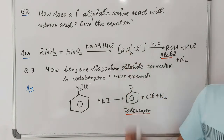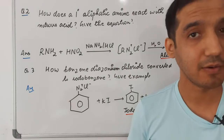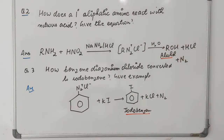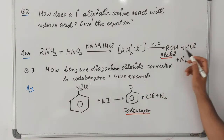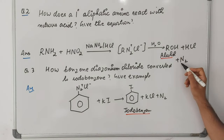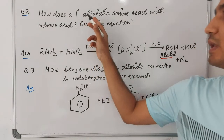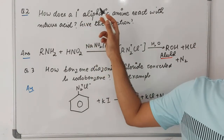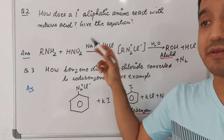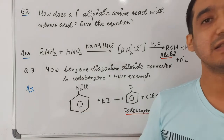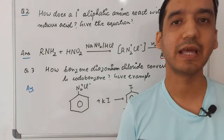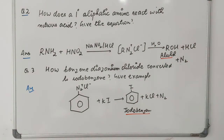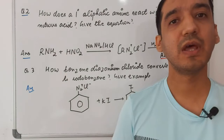Because the alkyl diazonium salt is unstable, when it reacts with water it results in the formation of alcohol, HCl, and N₂. Remember: whenever you use a primary aliphatic amine with nitrous acid, the end product formed is an alcohol.